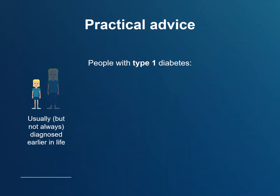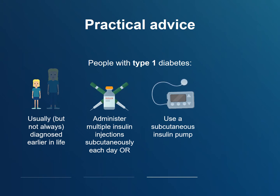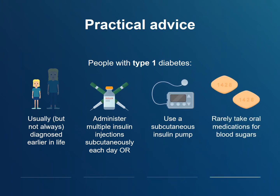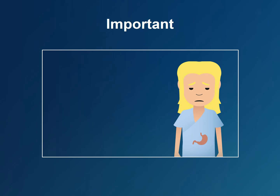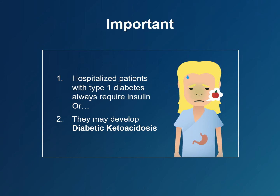Type 1 diabetes is often, but not always, diagnosed earlier in life. Those living with type 1 diabetes must self-administer insulin, either subcutaneously at least 4 times a day or via a continuous insulin pump, and rarely take oral medications for their blood sugars. Important: hospitalized patients with type 1 diabetes always require insulin, even when they are not eating. Without insulin, patients with type 1 diabetes may develop diabetic ketoacidosis.